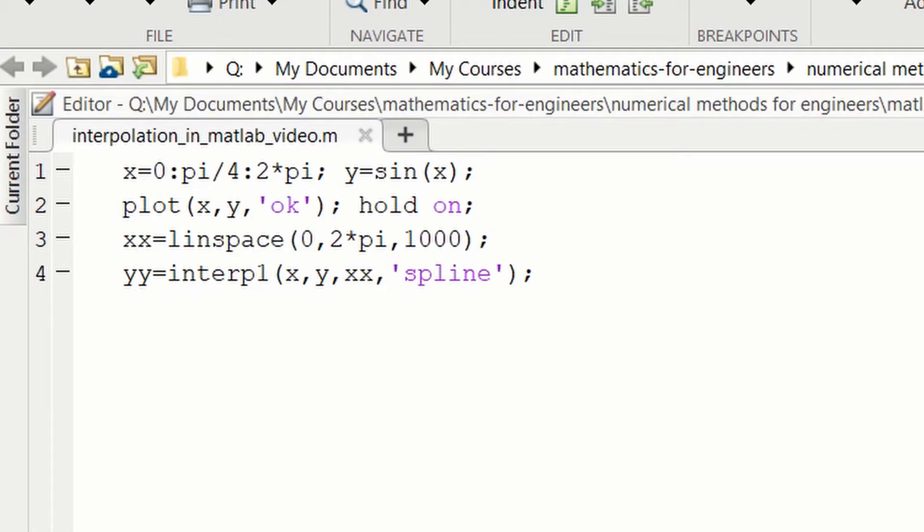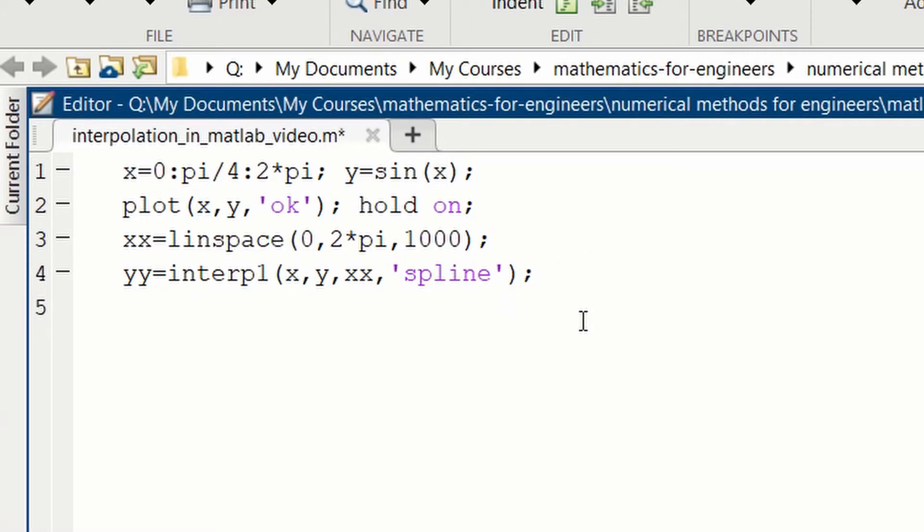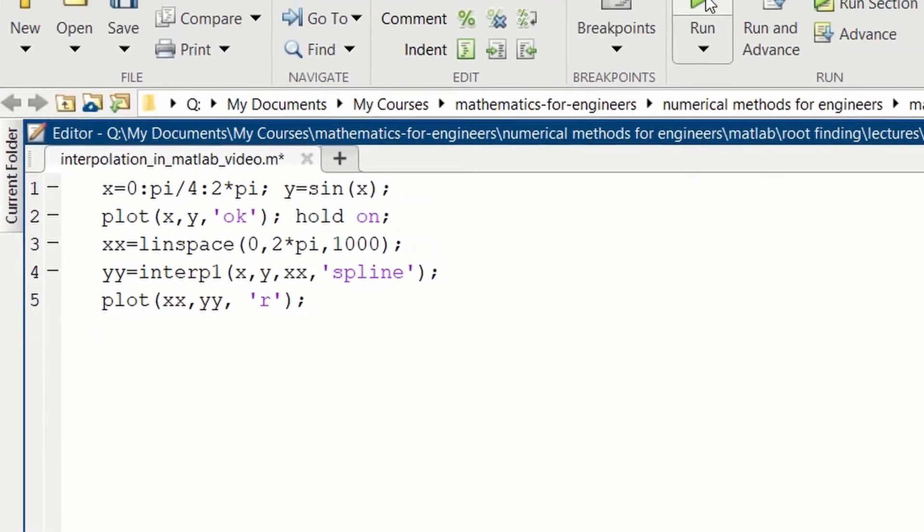Let's look at the plot. We'll plot our interpolation, xxy, and I'll color that in red. Let's run and look at the points and the interpolating function.